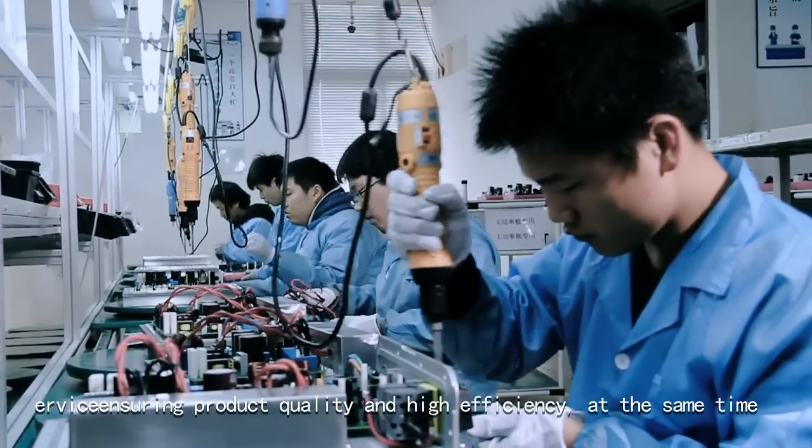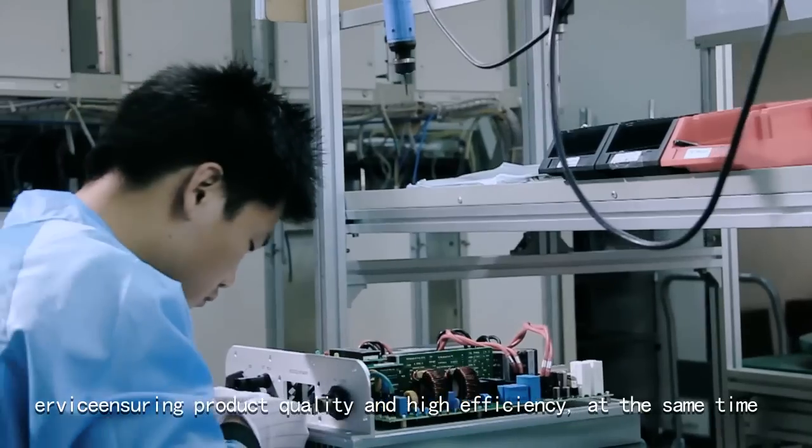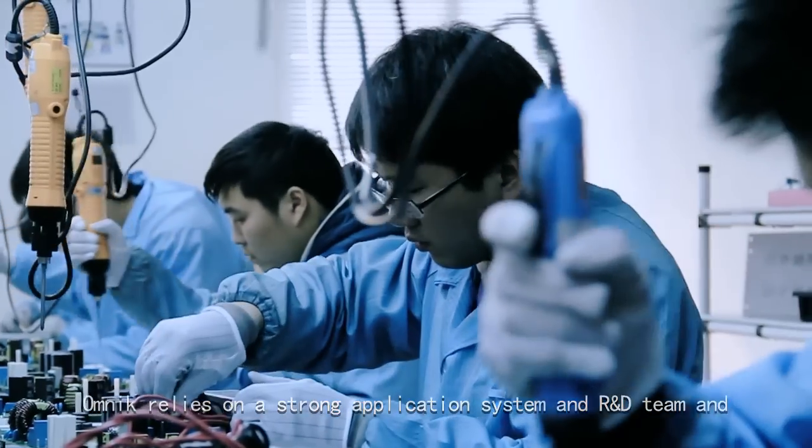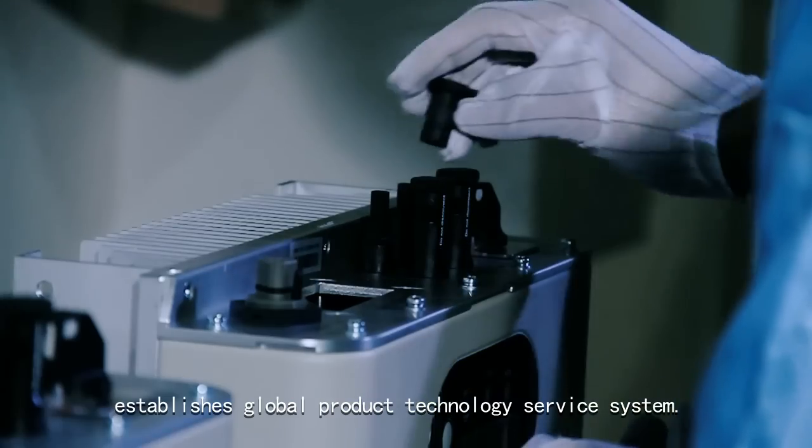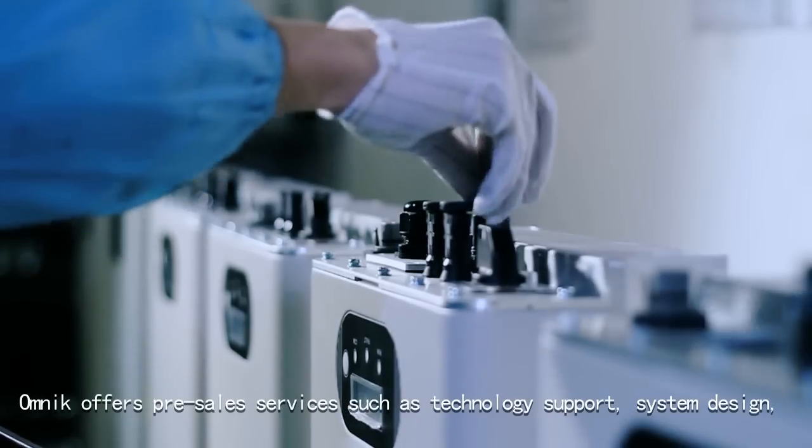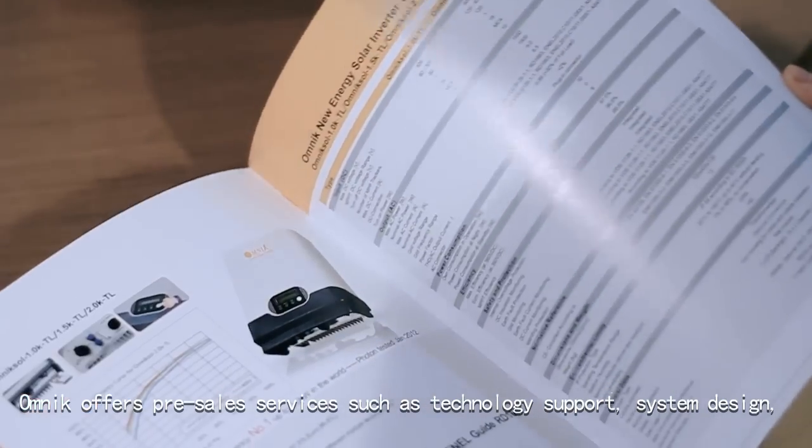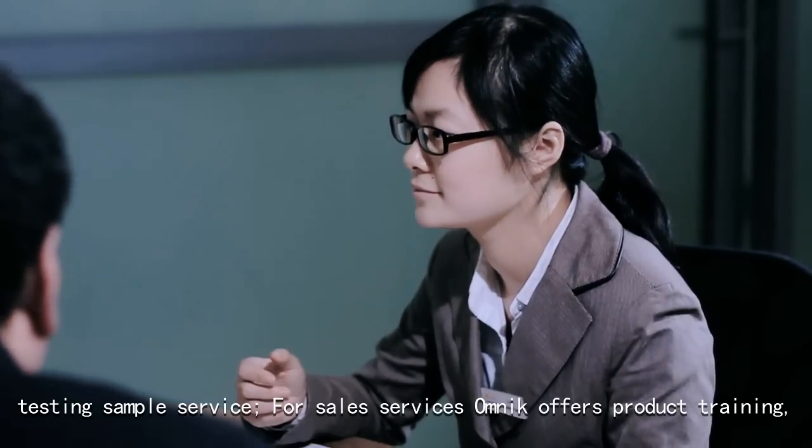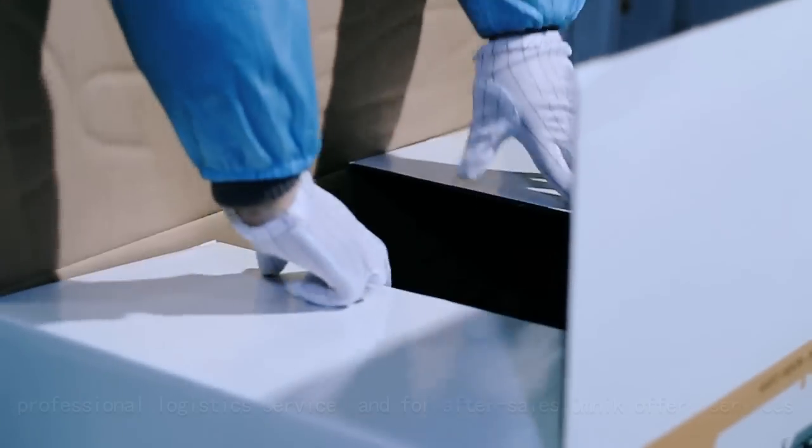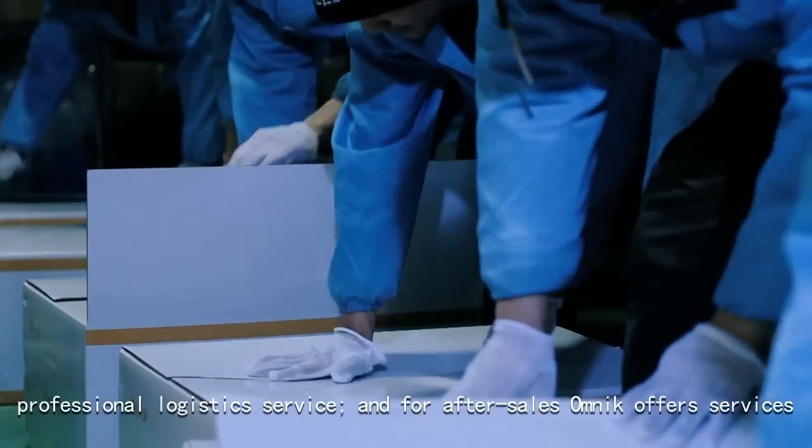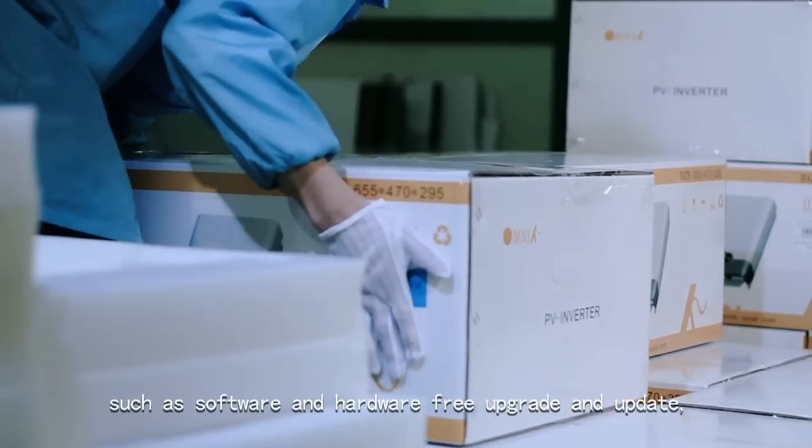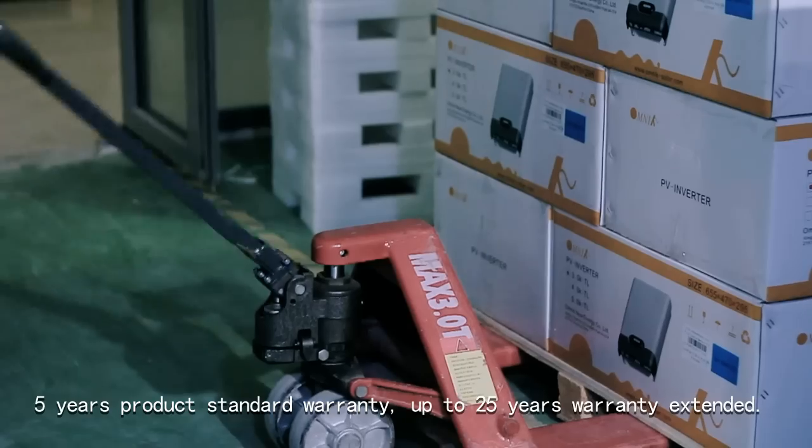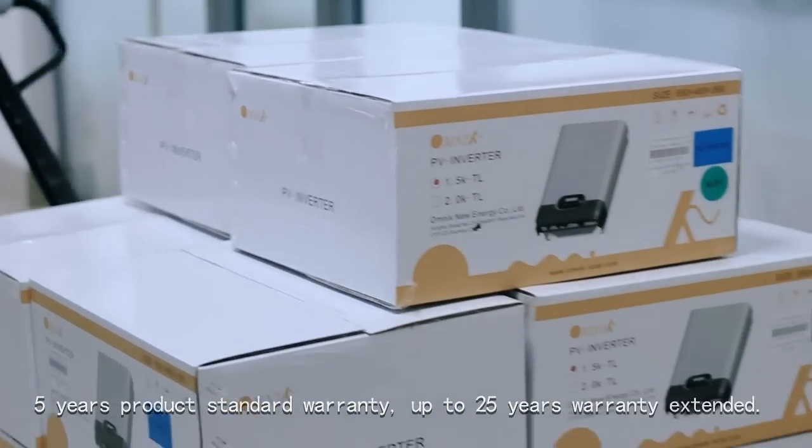Ensuring product quality and high efficiency, Omnic relies on a strong application system and R&D team, establishing a global product technology service system. Omnic offers pre-sale services such as technology support, system design, testing, and sample service. For-sale services include product training and professional logistics service. After-sales services include software and hardware free upgrade and update, five-year product standard warranty, and up to 25-year extended warranty.